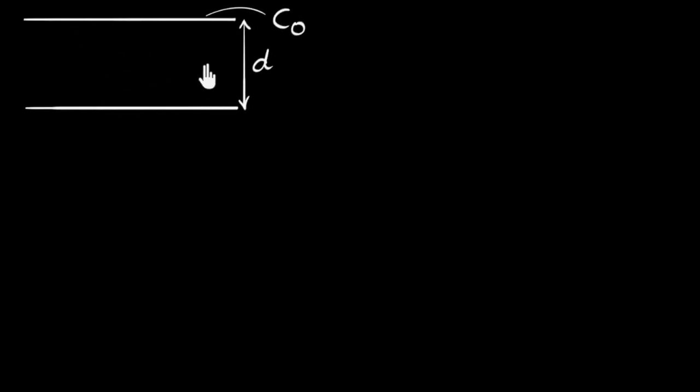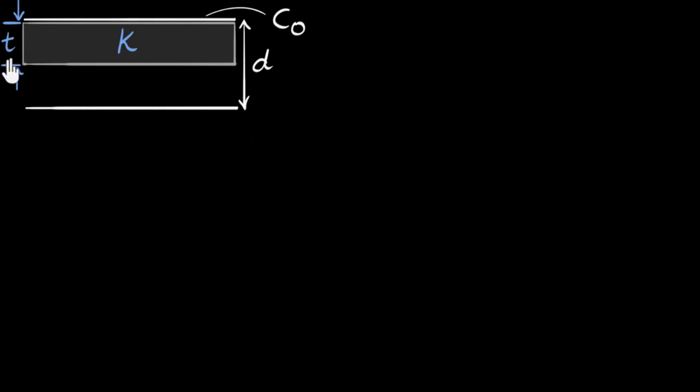Suppose we have a capacitor filled with air or vacuum, and its capacitance is C₀. The distance between the plates is D. Now we are going to insert an insulator — a dielectric of dielectric constant K — whose thickness is T. So it's not fully filled; it's partially filled. Our goal is to figure out what the new capacitance CK is going to be.